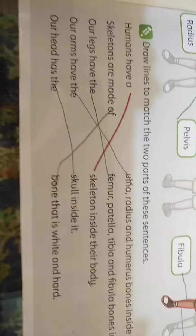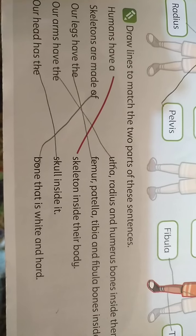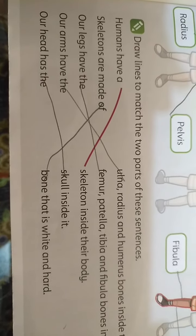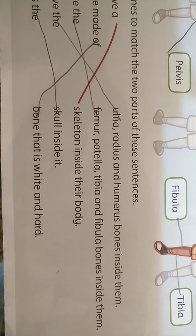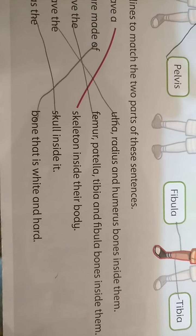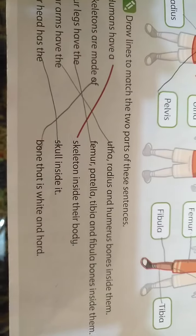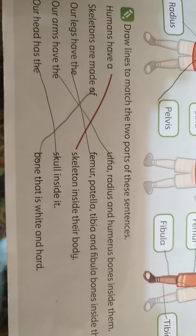Now come down to the second activity. It says: draw lines to match the two parts of the sentences. On one side they have given us one part of a statement, and on the other side they have given the other parts, but they are not in proper sequence. You are supposed to match both sides. Think of it like matching columns — column one on the left and column two on the right.